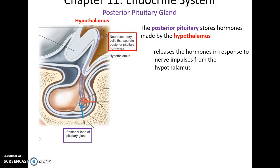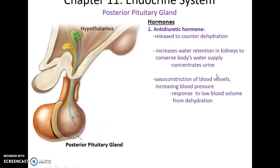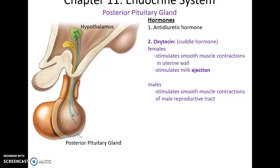The posterior pituitary gland stores hormones produced by the hypothalamus to be released when a nerve impulse from the hypothalamus signals it. One hormone is antidiuretic hormone, released to counter dehydration. It increases water retention by the kidneys so urine is more concentrated, and causes vasoconstriction of blood vessels to increase blood pressure — a response to low blood volume from dehydration. The other hormone is oxytocin, the cuddle hormone. In females it stimulates uterine muscle contractions during childbirth and stimulates milk release from the mammary glands. In males it stimulates smooth muscle contractions in the male reproductive tract. Overall, oxytocin makes people like other people better.